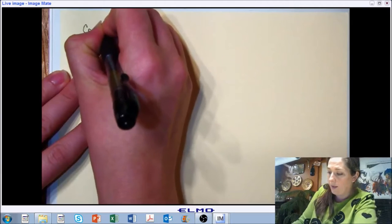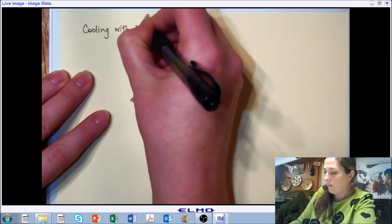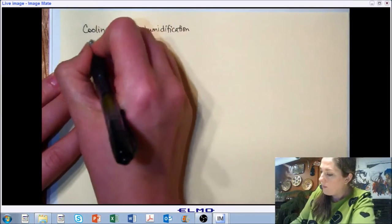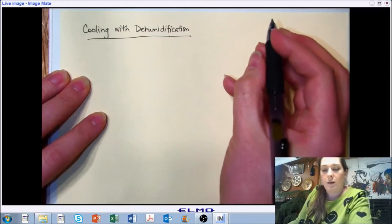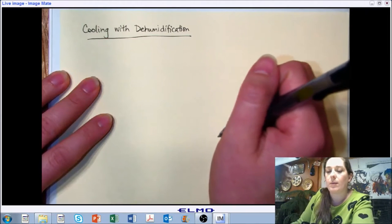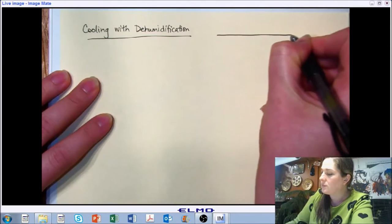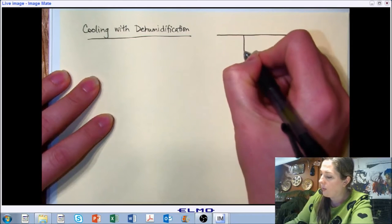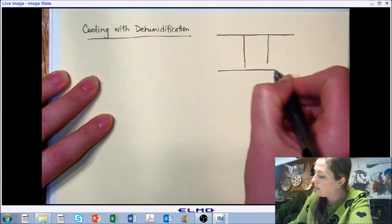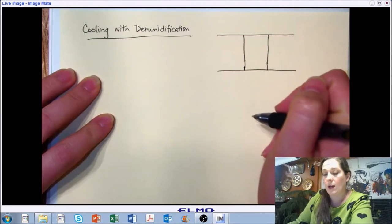We're going to talk about cooling combined with dehumidification. I think the best place to start is to think about how do we do it. When I showed you the basic sketch for just cooling, I showed you a cooling coil, a heat exchanger. When we are intending to dehumidify with our cooling, usually we get a little more sophisticated with our system.